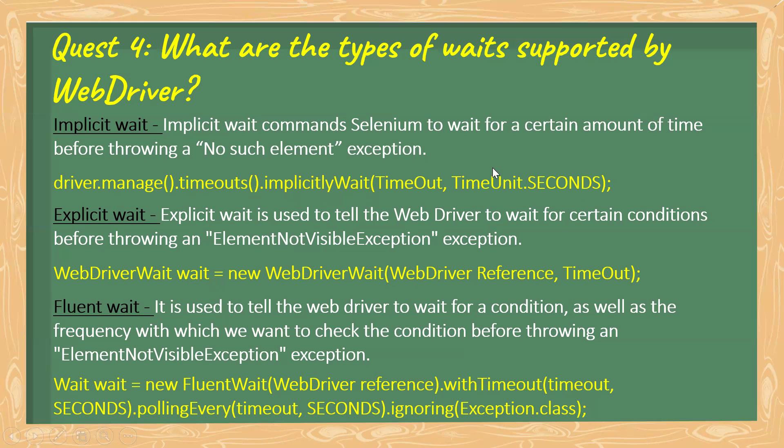Explicit wait is different from implicit wait because in explicit wait you have the option to provide a condition. It will check certain conditions before throwing an exception such as 'element not visible'. The syntax is: WebDriverWait wait = new WebDriverWait(driver, timeout) where you also specify the timeout.